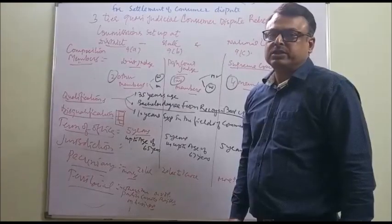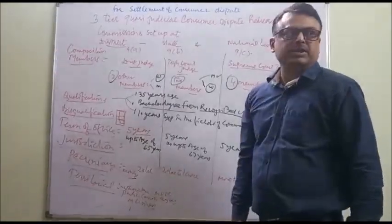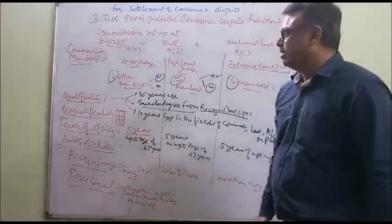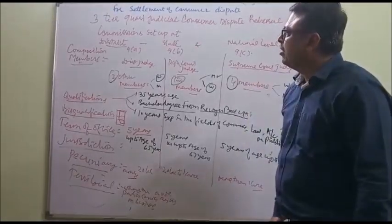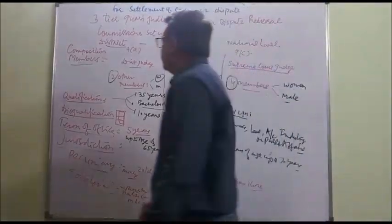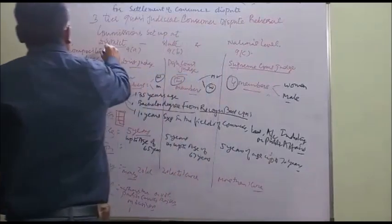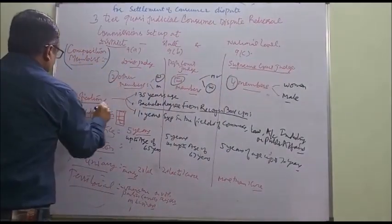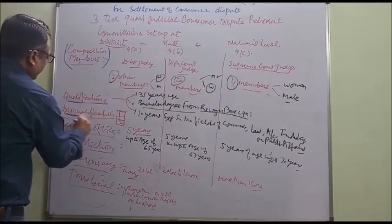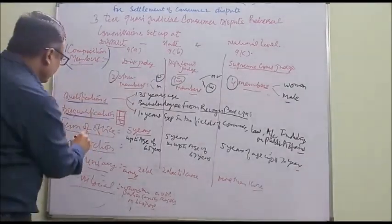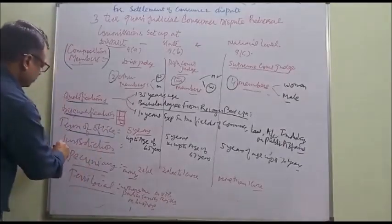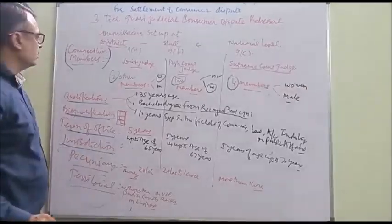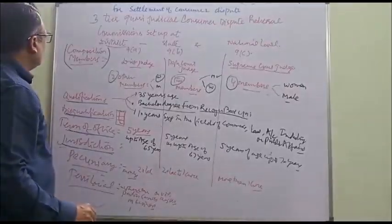The Judicial Dispute Settlement Machinery is set up at Centre level, State level and District level. I will explain all these under various headings like Composition, Qualification, Disqualification, Term of Office of the Members, Jurisdiction of the Commissions. First is Composition.